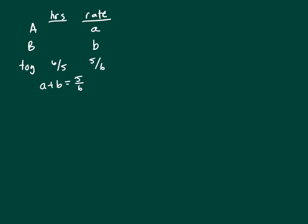And it tells me pumps A and C, operating together, can fill the tank in three-halves hours. Using the same format, that would be A's rate plus C's rate equals the reciprocal of the time, which is two-thirds. And then pumps B and C together can fill the tank in two hours, which would give a rate of one-half.